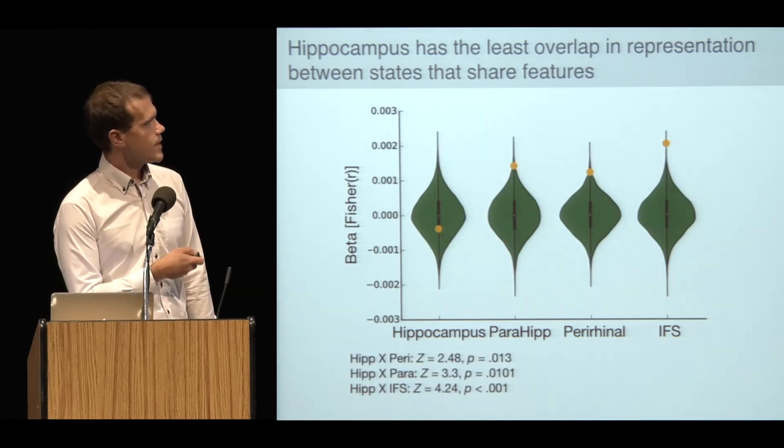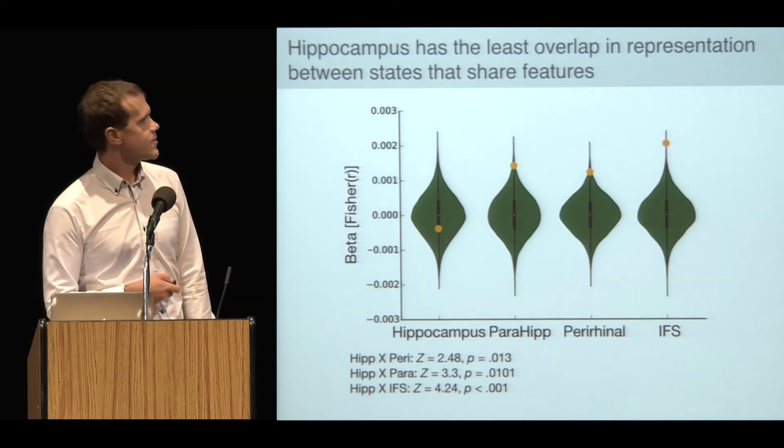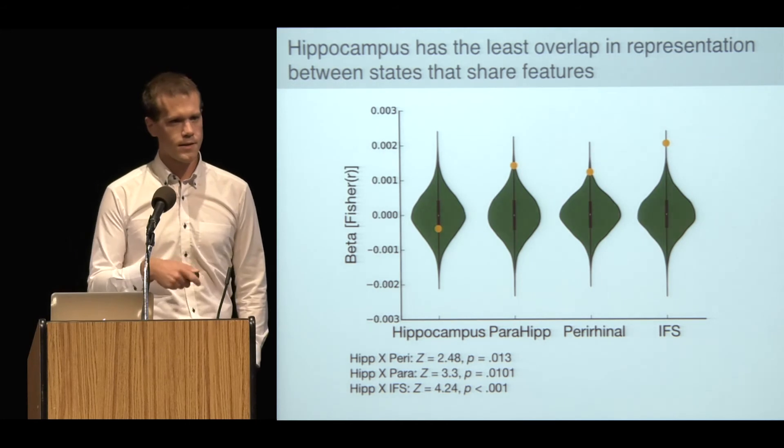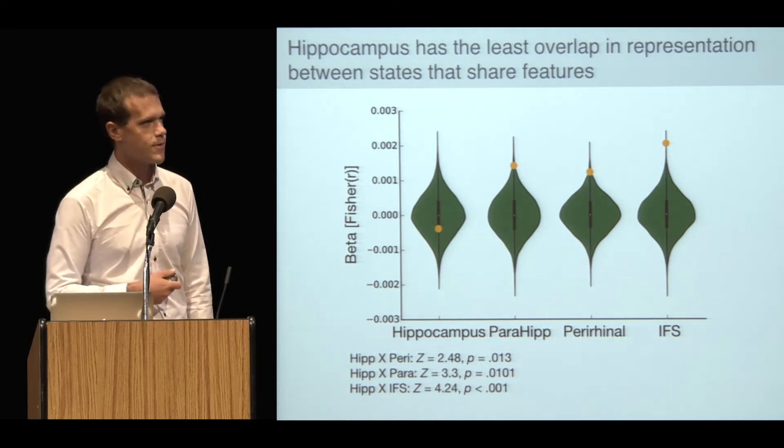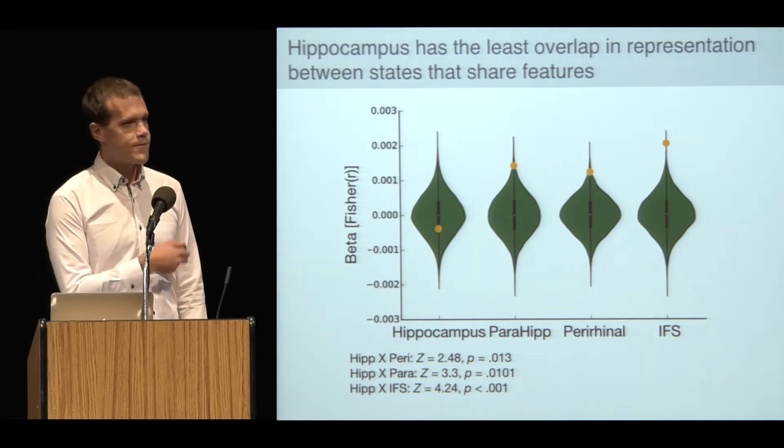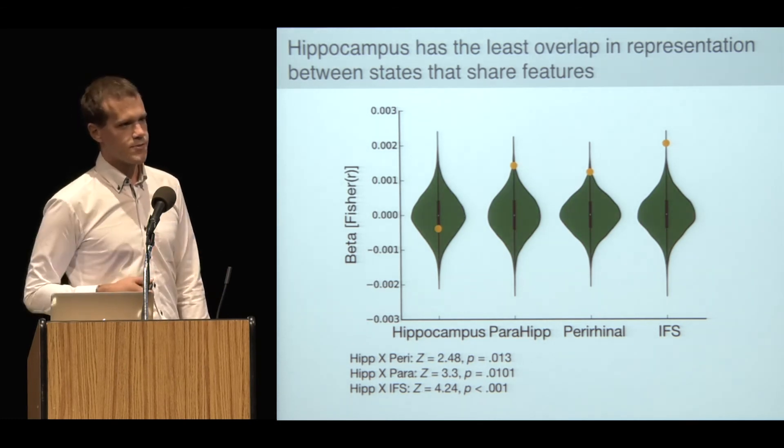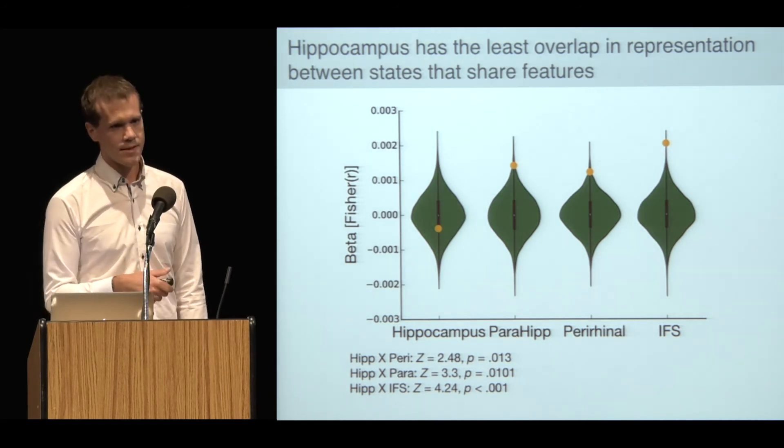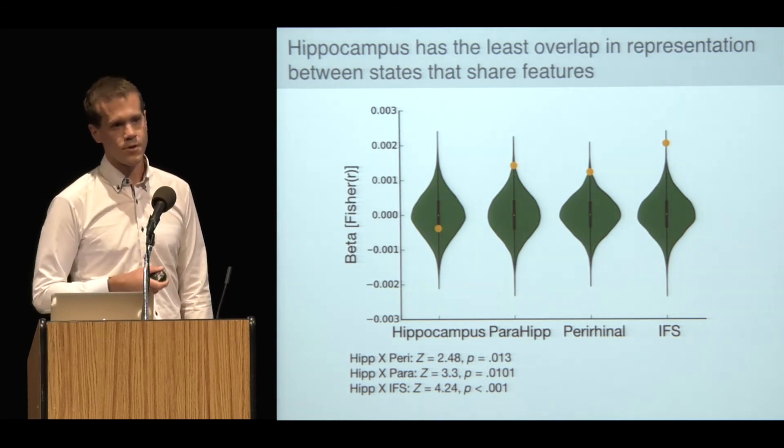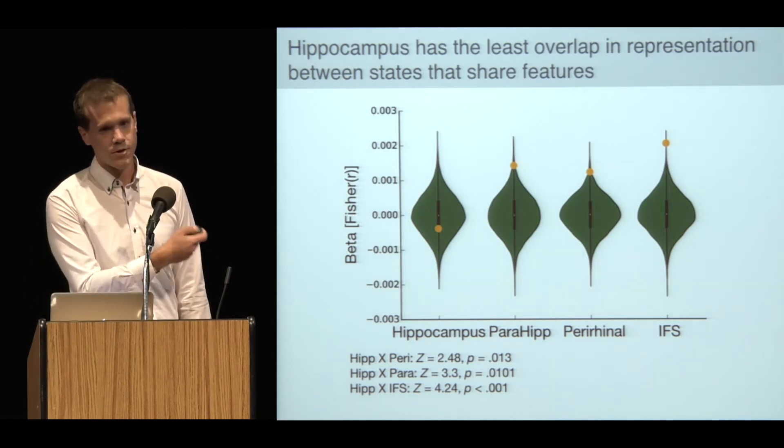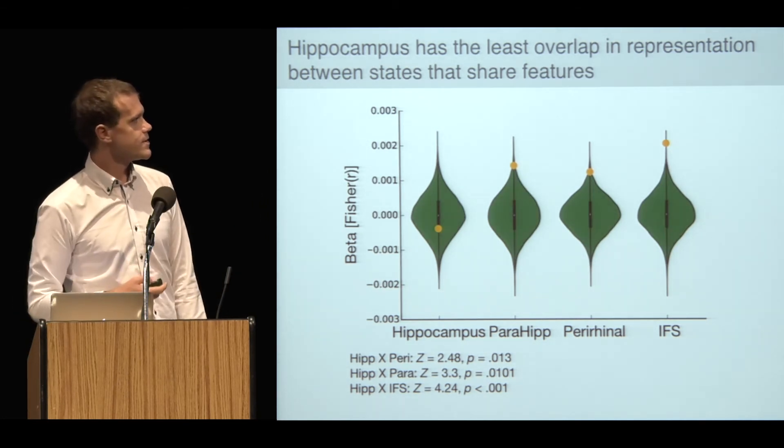The orange dots are each of the empirical averages across subjects, and the green is a null distribution constructed from permutations. You can see that there's evidence of overlap in representations for each of my control ROIs, but no such evidence in the hippocampus. The hippocampus is no more similar for stimuli sharing features than for those that aren't, and has significantly less overlap than any of these other regions.